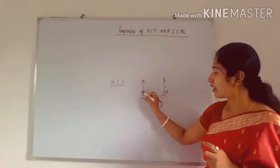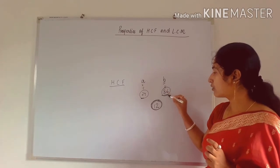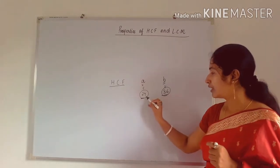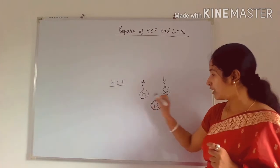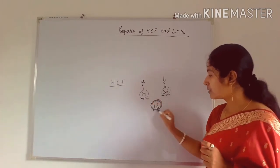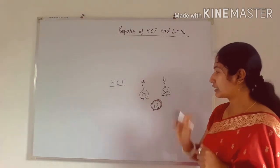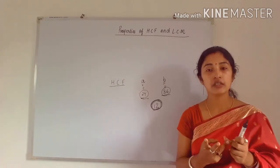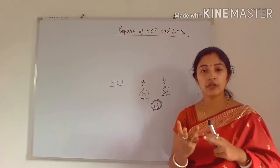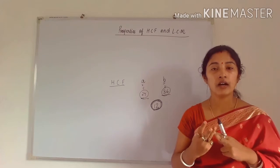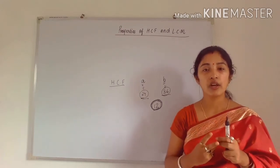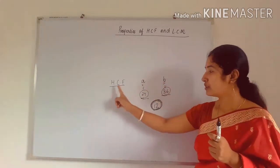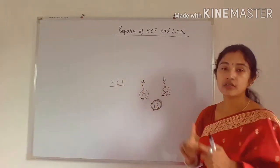24 has many factors and 36 has many factors, but 12 is the lowest among 12, 24, and 36. So in this first property, you observe three things: the two numbers and their HCF — and the HCF is the smallest one among them.